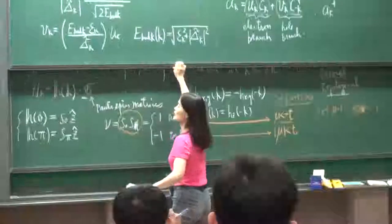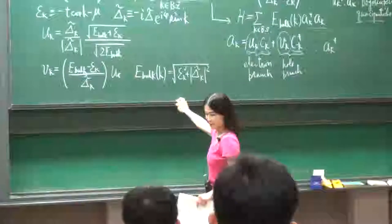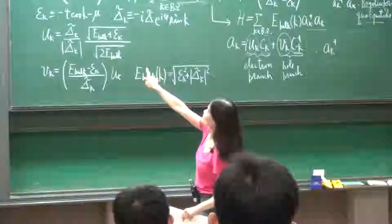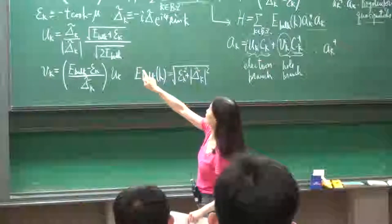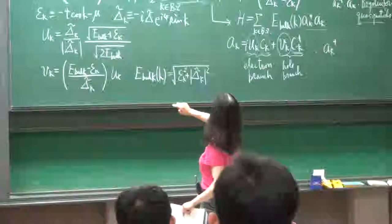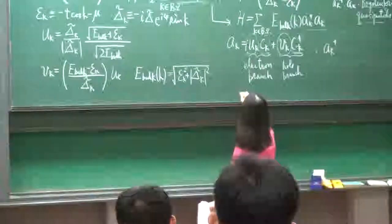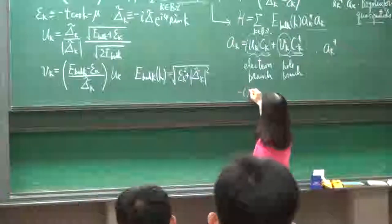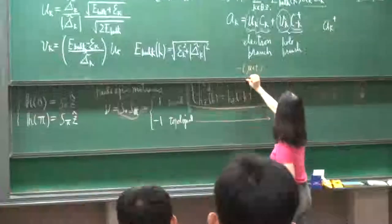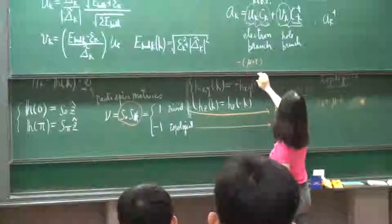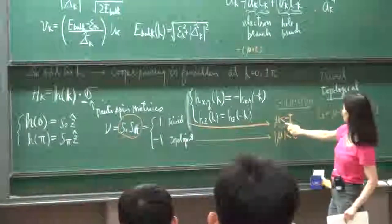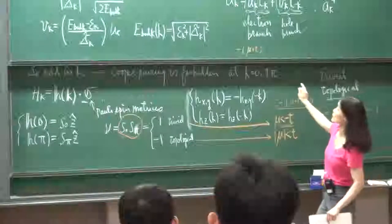So k is equal to 0, that's minus k minus mu. So this is negative or positive — it's minus mu plus t. But mu is such that minus mu plus t is greater than 0.